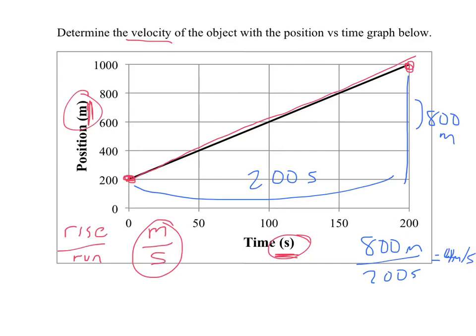Now we could have picked any two points on the line, but it's usually best to pick points you can be really confident in. For example, I could have picked these two points that are on these corners.